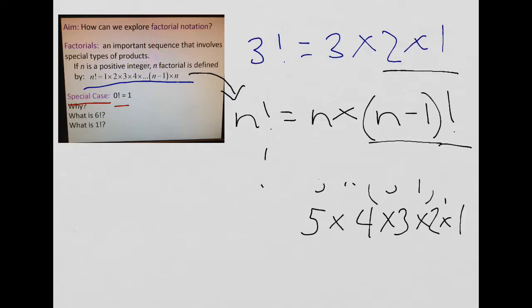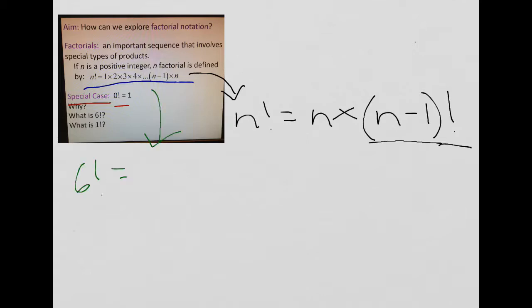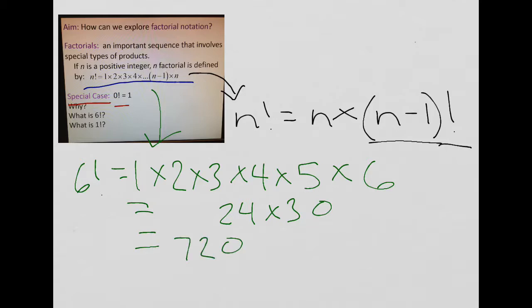First off, let's take a look at doing 6 factorial. So, we just discussed 5 factorial. Let me do 6 factorial with the first definition here. That's going to be 1 times 2 times 3 times 4 times 5 times 6. So, if we were to multiply this out, we have 24 times 30. So, this gives us an answer of 720. So, that's 6 factorial. Most students can figure that out. Not too bad. And most students know 1 factorial is just the 1 that we have here. It's just that number itself.